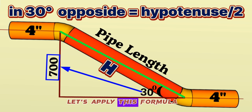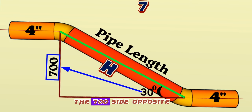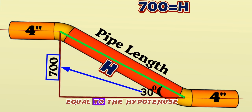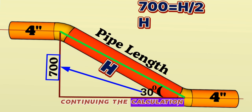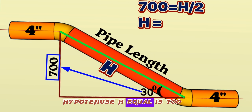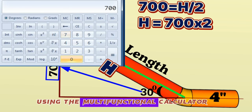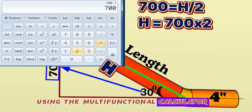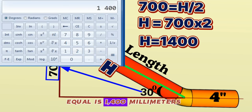Applying this formula to our example: the 700mm side opposite the 30-degree angle equals the hypotenuse H divided by 2. Therefore, H equals 700 multiplied by 2. Using the calculator, we find H equals 1400 millimeters.